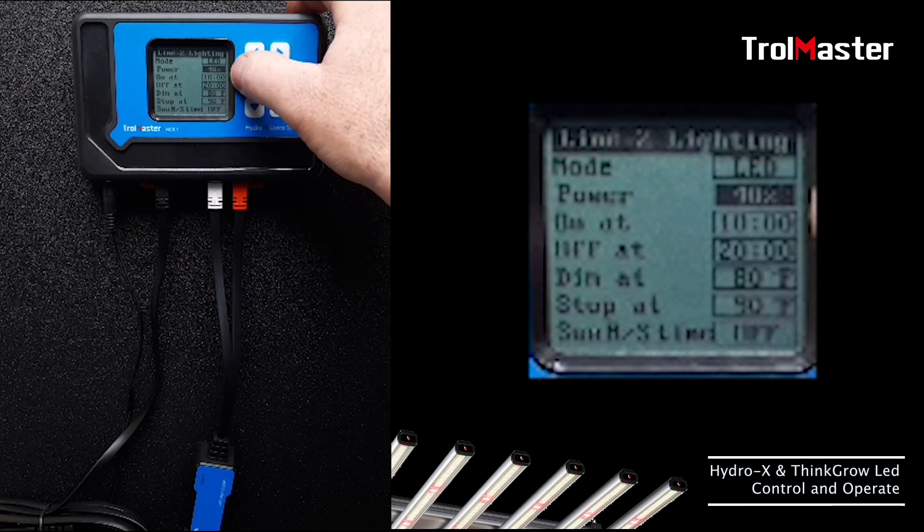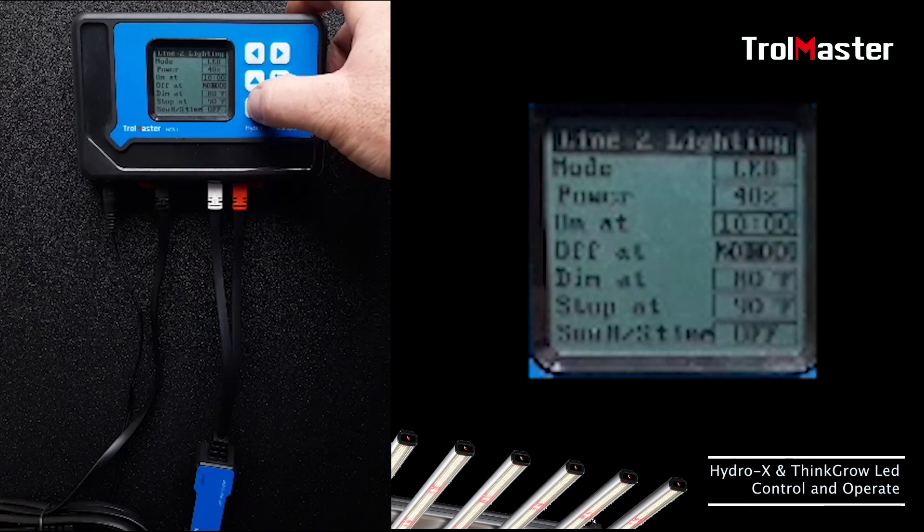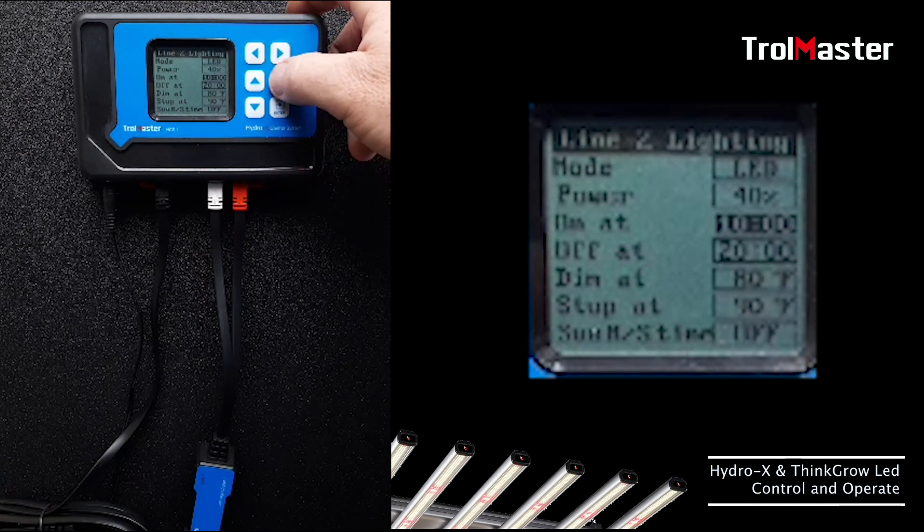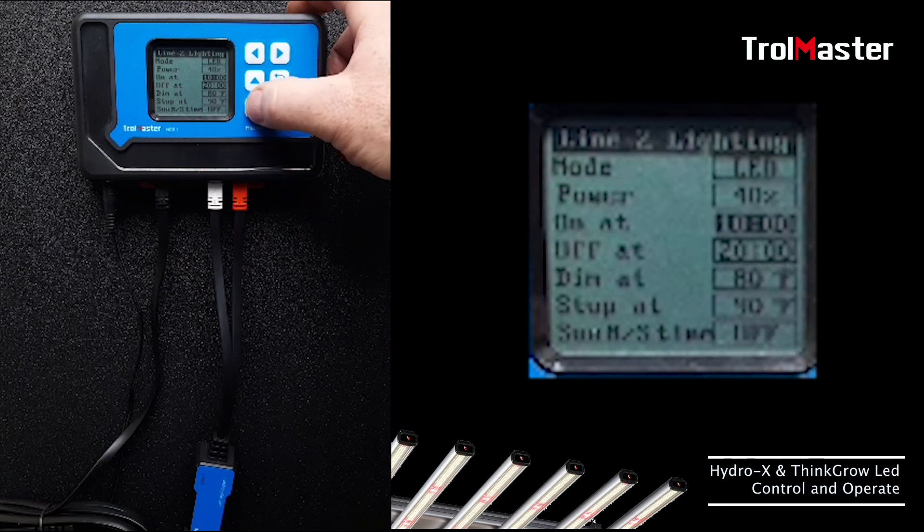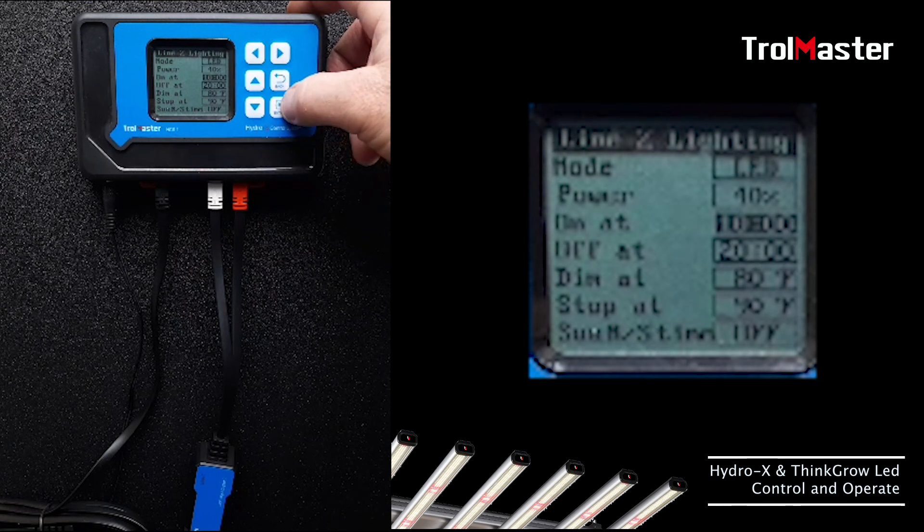You can also set separate times, on and off times, so that those deep red LEDs can be run. Sometimes people prefer to use them as a supplemental light, other times they use it as a photo period reduction method.